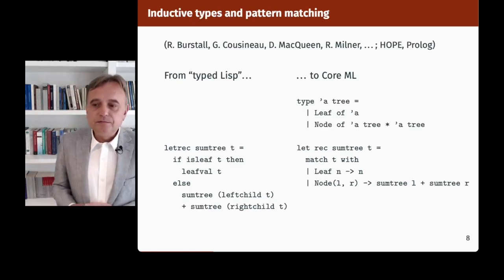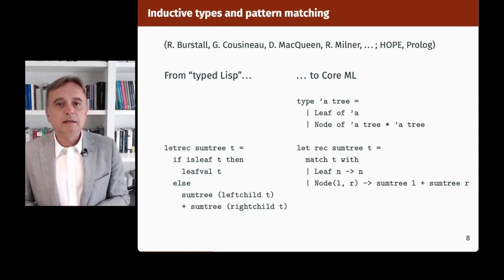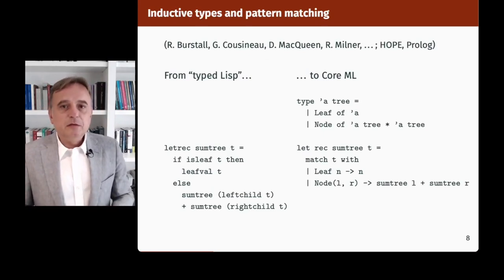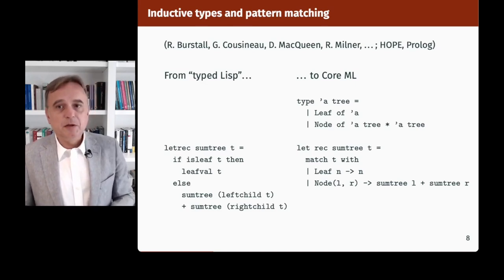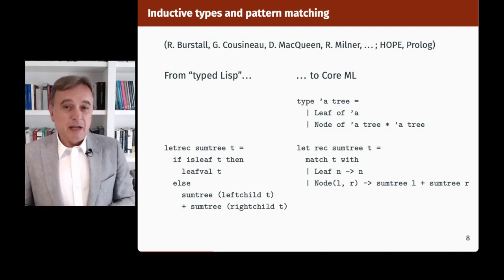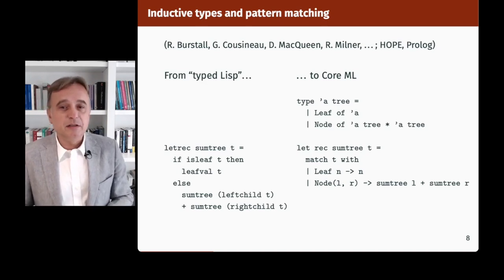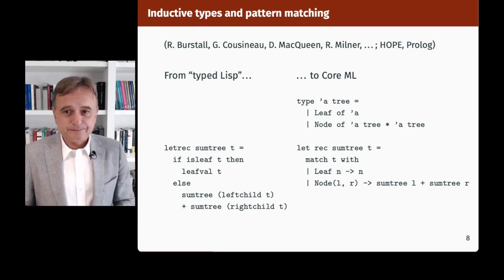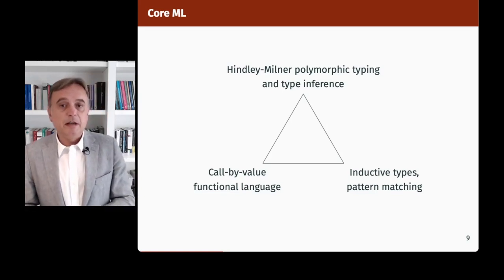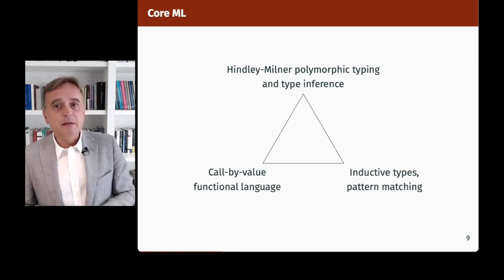It's only in the very early 80s that inductive types and pattern matching were added to LCF ML, through work by Burstall, McQueen, Milner in Elimar, and Guy Cousineau in Paris, with some inspiration from Hope — an experimental language of Burstall — and perhaps also from Prolog. They went from the old type-to-Lisp style to Core ML with a datatype definition and a function defined by pattern matching over the tree. That gave Core ML as we know it today: a call-by-value functional language, inductive types with pattern matching, and Hindley-Milner polymorphic types and type inference.